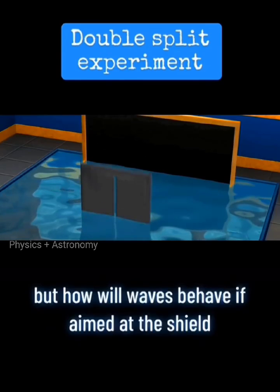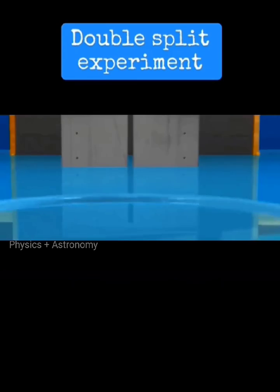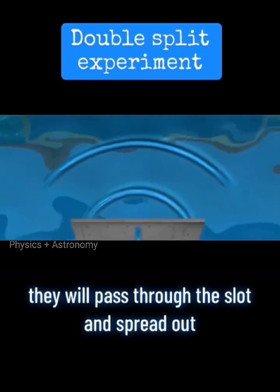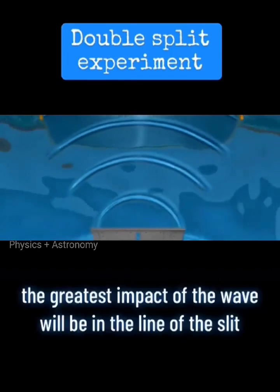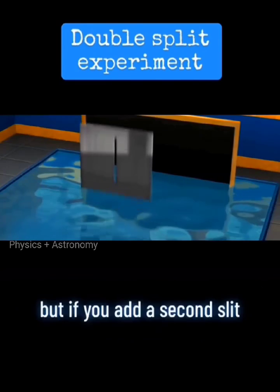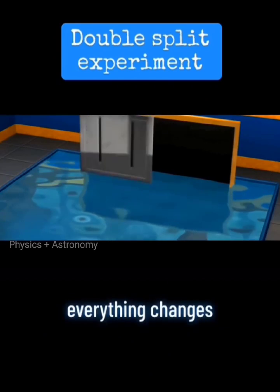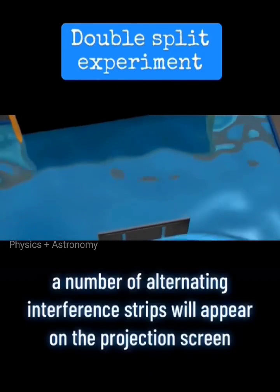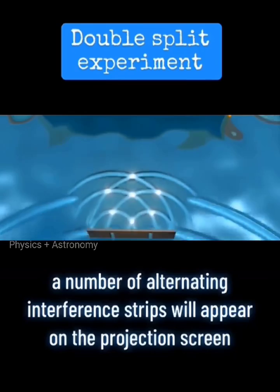But how will waves behave if aimed at the shield? They will pass through the slot and spread out. The greatest impact of the waves will be in the line of the slit, as in the case with the balls. But if you add a second slit, everything changes. A number of alternating interference strips will appear on the projection screen.